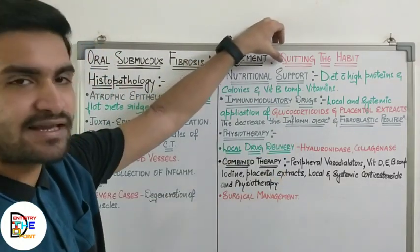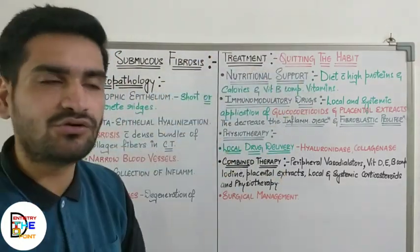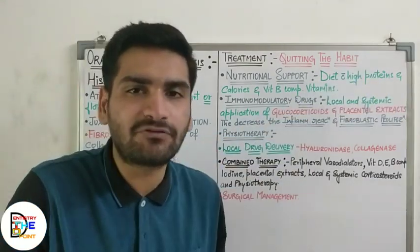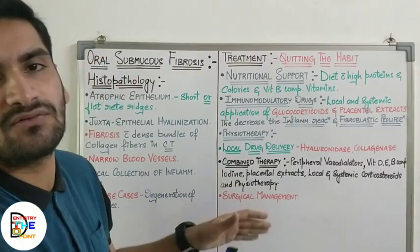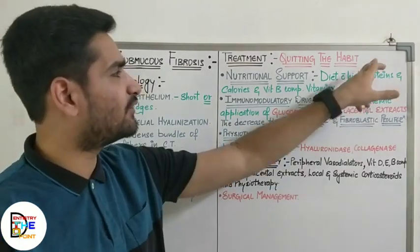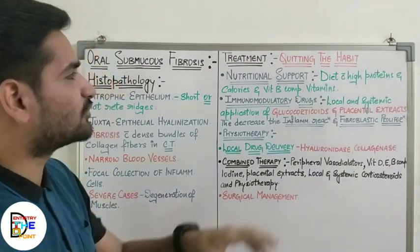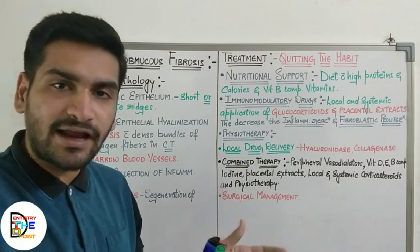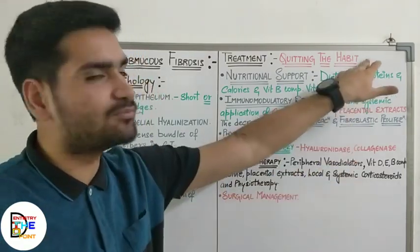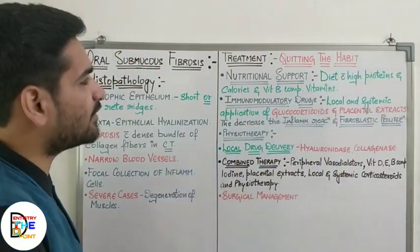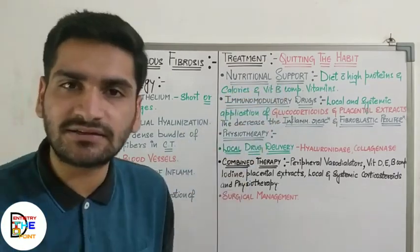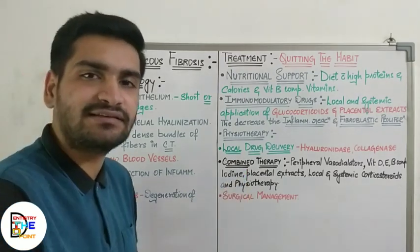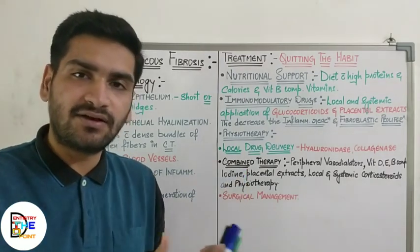Moving on to the treatment of OSMF: the first and foremost step is quitting the habit. If the patient does not quit the habit, treatment has little use. Educating and motivating the patient, and gradually shifting them away from consuming areca nut or betel nut, is very helpful. Next is nutritional support — the diet should be high in proteins and calories, and vitamin B complex vitamins are also very important.